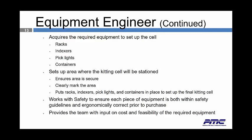The equipment engineer acquires the required equipment to set up the cell — racks, indexers, pick lights, and containers — sets up the area where the kitting cell will be stationed, ensures the area is secure, clearly marks the area, and puts racks, indexers, pick lights, and containers in place. The equipment engineer works with safety to ensure each piece of equipment is within safety guidelines and ergonomically correct prior to purchase, and provides the team with input on cost and feasibility. Oftentimes, the idea of a kit may be scrapped due to exorbitant cost — sometimes the kit boxes required to protect the parts cost so much that the kit is not worthwhile.